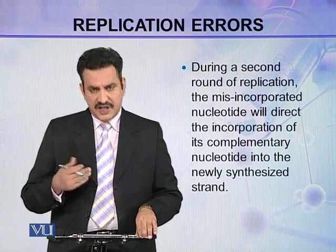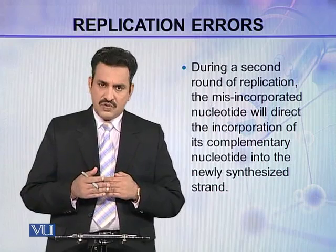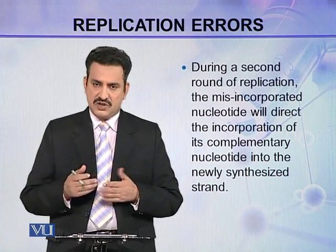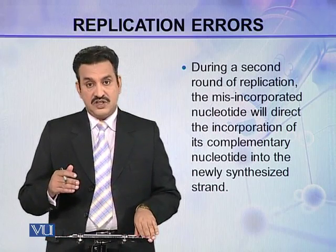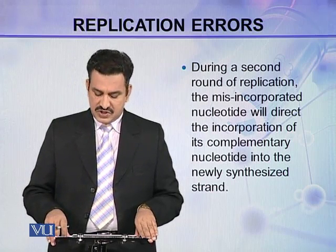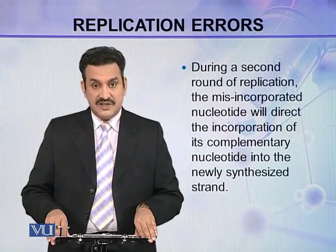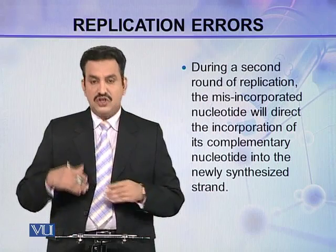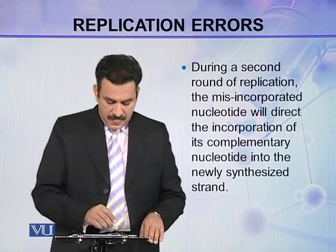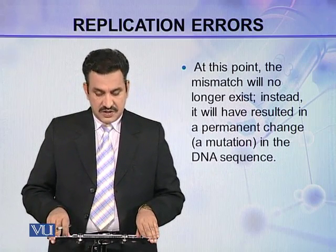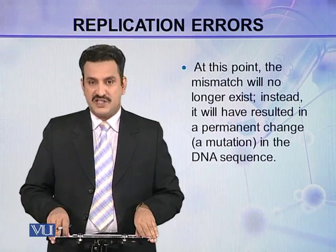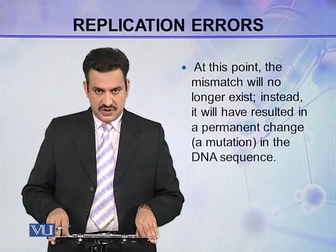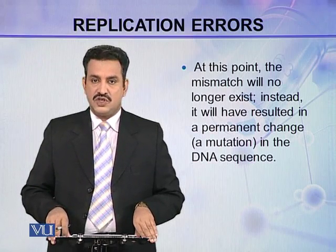During a second round of replication — so in the first round a misincorporation has taken place, a base has been incorporated wrongly — but in the second round of replication, the misincorporated nucleotide will direct the incorporation of its own complementary nucleotide into the newly synthesized strand. At this point, the mismatch will no longer exist. Instead, it will have resulted in a permanent change, a mutation in the DNA sequence.